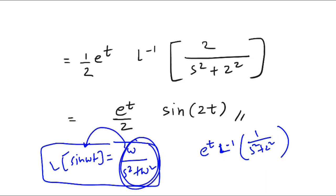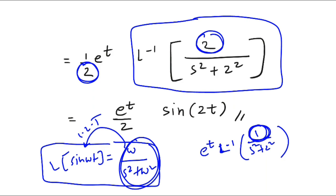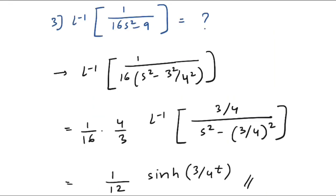Taking e^t outside, the remaining part is the Laplace inverse of 1/(s²+2²). We know that the Laplace of sin(ωt) = ω/(s²+ω²). Since ω is not present in the numerator, multiply and divide by ω=2, so that the Laplace inverse of 2/(s²+2²) = sin(2t). The final answer is e^t · sin(2t)/2, i.e., (1/2)e^t·sin(2t).